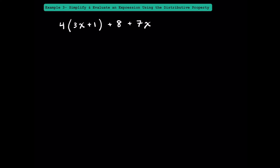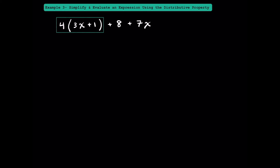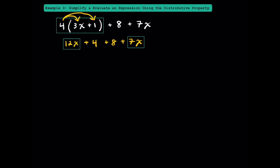Now let's simplify an algebraic expression with more terms. While you might want to combine 3x and 7x right away, you can't because it goes against the order of operations — the 4 means we have 4 of these 3x's. Since the distributive property is a form of multiplication, it comes before adding or subtracting. We distribute the 4 to 3x and to 1, getting 12x plus 4. Then we still have the plus 8 and plus 7x. Combining like terms: 12x and 7x give 19x, and 4 and 8 give 12, so our simplified expression is 19x plus 12.